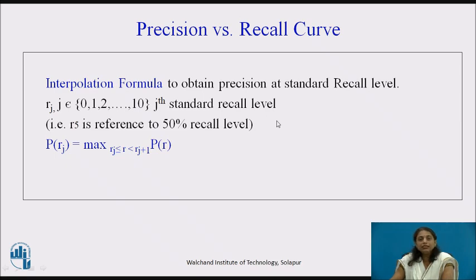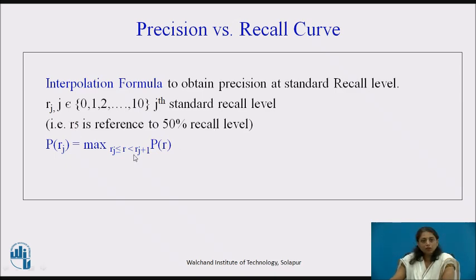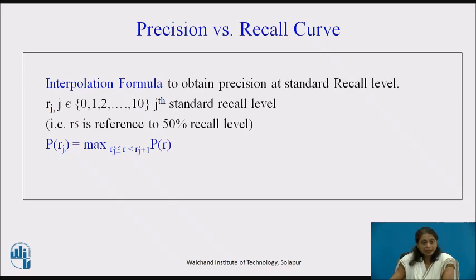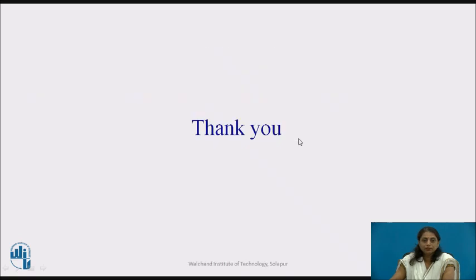It is not always the case that we obtain values exactly at the standard recall levels. When we do not, we use an interpolation formula to obtain precision at standard recall levels. The formula computes the maximum precision for recall values between Rj and Rj+1. In the next lecture we will see how to apply this interpolation formula to calculate precision at standard recall levels. Thank you.